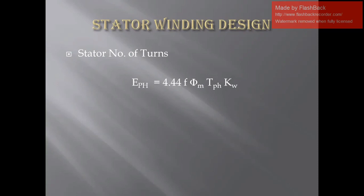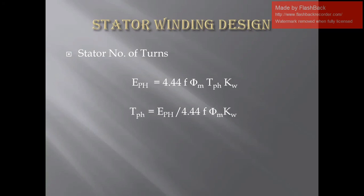To calculate stator number of turns, we use the induced EMF per phase equation: E = 4.44 × f × Φ_max × T_s × k_w, where f is frequency, Φ_max is maximum flux, T_s is number of turns per phase, and k_w is the stator winding factor. If all quantities are known, we can easily calculate stator number of turns per phase. The flux Φ is the maximum flux, and from the specific magnetic loading — which is already available — we can easily calculate our flux Φ.